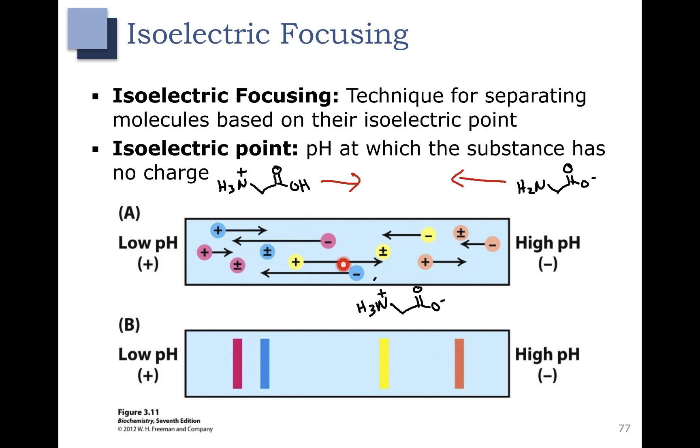Then it's attracted to the negative end, and it will go back and forth until it finds its perfect point. The bottom example B here is showing all of the different isoelectric points for these amino acids.